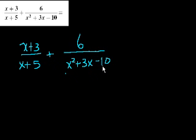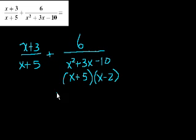Let's see if I can factor this. What two numbers, when I multiply them, equal minus 10, and when I add them, equal plus 3? Well, 5 times what is minus 10? It's 5 times minus 2, and 5 plus minus 2 is 3, so that works, x minus 2. So this is actually our least common multiple, this expression right here.